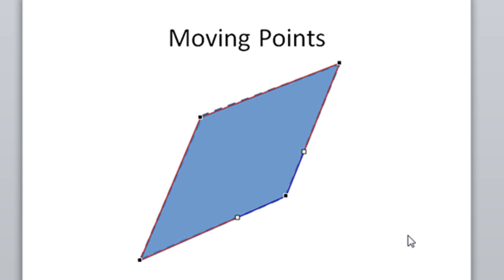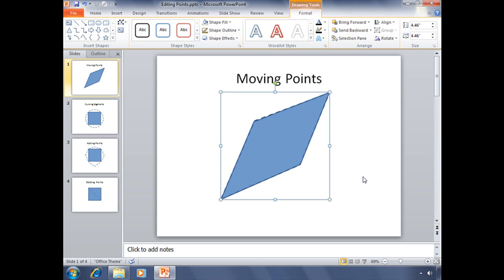To close or exit the Edit Points feature, all you've got to do is click anywhere else on your slide and your shape will return to normal. That's one way to edit a shape by moving its points.